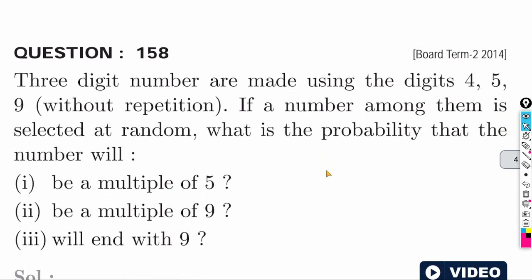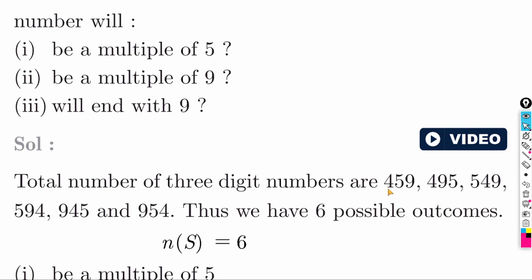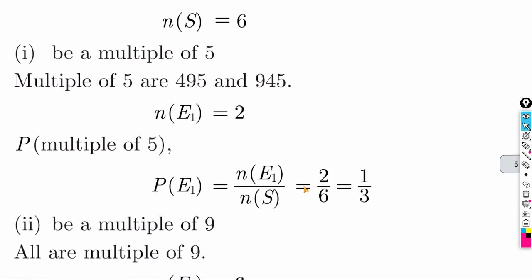Three-digit numbers are made using the digits 4, 5, and 9 without repetition. This is a question from 2014. All possible three-digit numbers: 459, 495, 549, 594, 945, 954 — total 6 numbers. Find probability that the number is a multiple of 5. A number is a multiple of 5 if it ends in 5. Numbers ending in 5: 495, 945 — that is 2 numbers. Probability = 2 by 6 = 1 by 3.